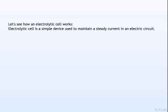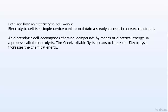Let's see how an electrolytic cell works. A simple device to maintain a steady current in an electric circuit is the electrolytic cell. An electrolytic cell decomposes chemical compounds by means of electrical energy in a process called electrolysis. The Greek word lysis means to break up.